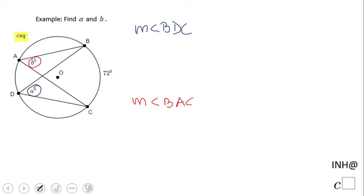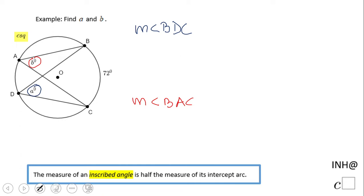We're going to use this property here: the measure of an inscribed angle is half the measure of its intercepted arc. Let's take a look at the first one, BDC. If you notice, the intercepted arc is BC, which is given to us as 72.